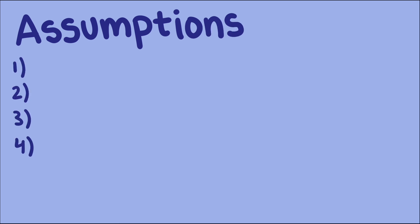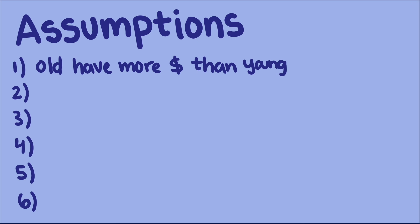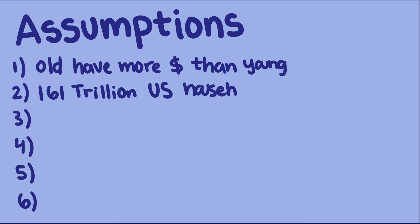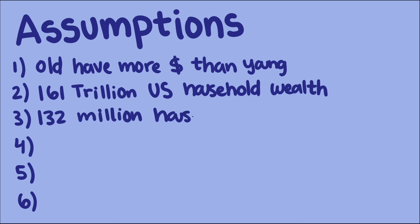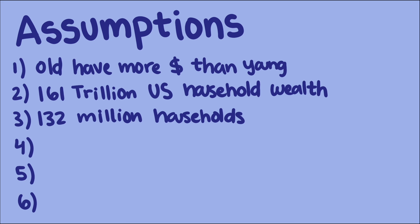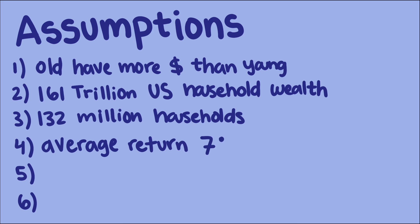For this video, we will need to make some pretty strong assumptions to work out an ideal distribution. We'll keep some of the ones we used from the last video and add some more. For example, in an ideal world, households that are older have more wealth than younger households, since the younger ones will have more time to grow their wealth. We will also assume that there is $161 trillion of household wealth in the U.S. and 132 million households. We will also assume that households get an average return on their wealth of 7%, which is slightly lower than the inflation-adjusted return of the S&P 500.